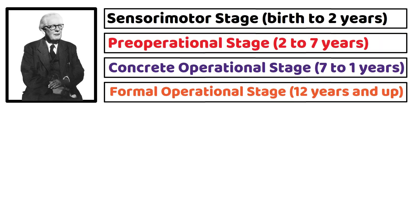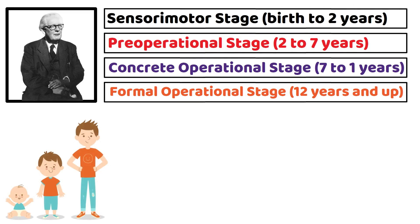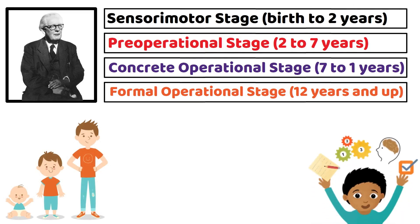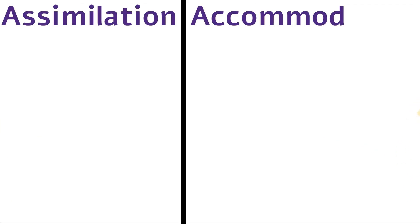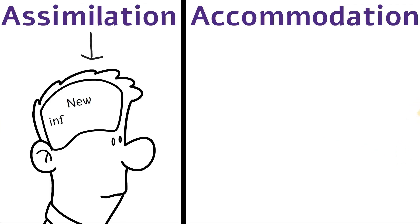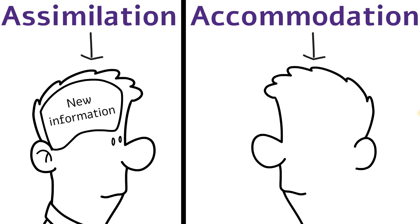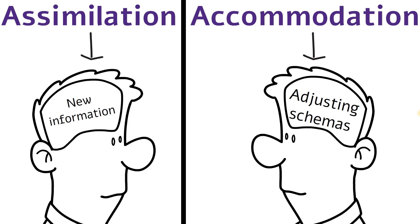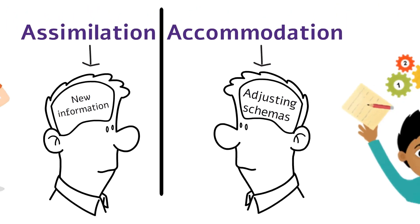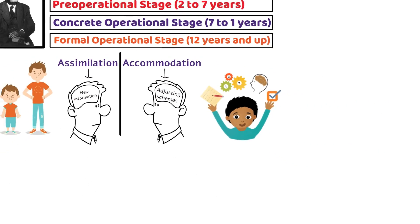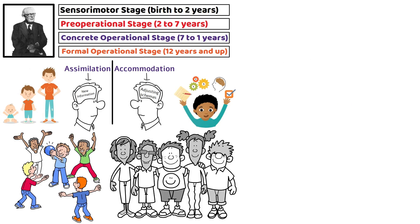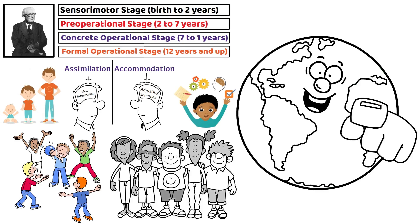Piaget emphasized that these stages are universal, but the ages at which children progress through them may vary. He believed that cognitive development occurs through a process of assimilation and accommodation. Assimilation involves integrating new information into existing schemas or mental structures, while accommodation involves adjusting schemas to incorporate new information that doesn't fit. Through this process, children develop increasingly sophisticated ways of understanding their world.